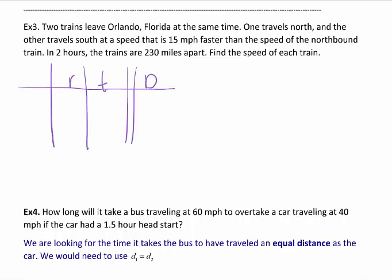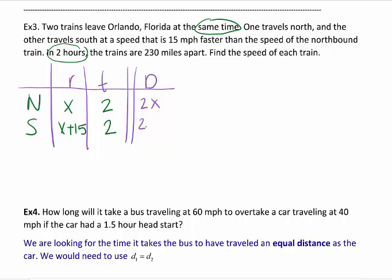I have my chart set up again. Two trains leaving Orlando, same time. That's an important word. One is traveling north and one is traveling south. So the key here is the one traveling south, the speed is 15 miles per hour faster than the north. So the north's rate is x, south would be 15 miles per hour faster, so we add 15 to the rate. Two hours. They left at the same time after two hours. So in this case, the 2 is my time. We multiply across to get my distance. This is a total distance, so we are going to add distance 1 plus distance 2 equals the total.